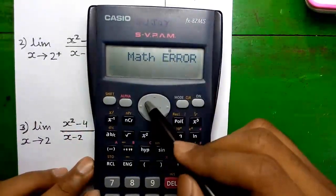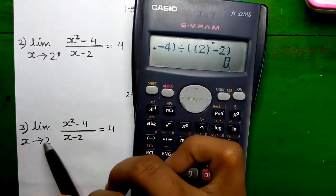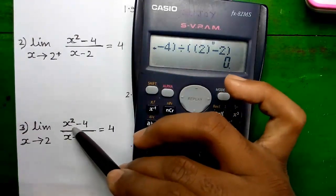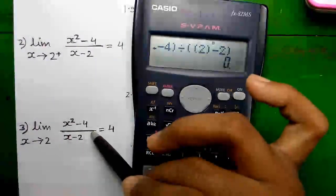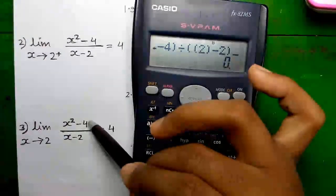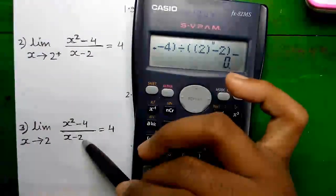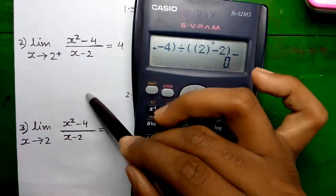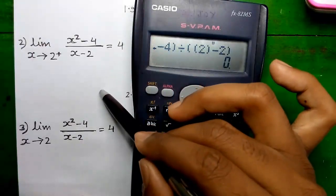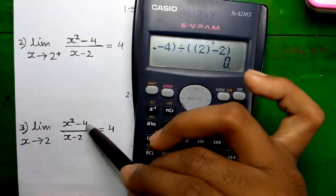You will get a math error. Why are you getting a math error for x equals to 2? Because for x equals to 2, it will be 2 squared, that is 4 minus 4, which is 0, divided by 2 minus 2, which is also 0. We can't divide any real number, even 0, by 0, because any real number divided by 0 is undefined — represented by the infinity symbol. Infinity is not a value, but it's an idea.